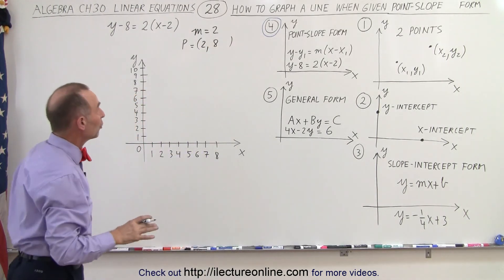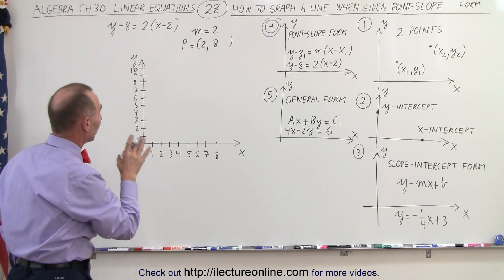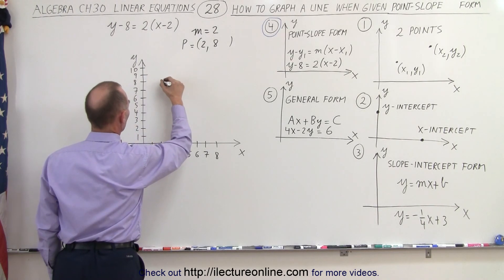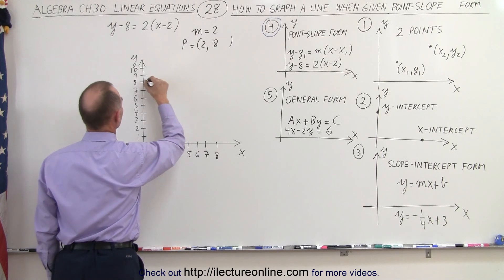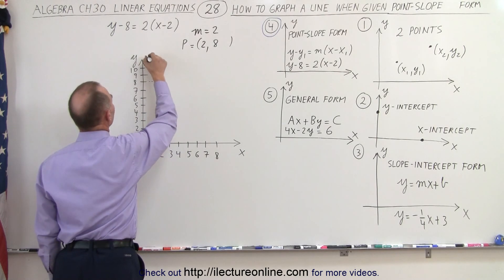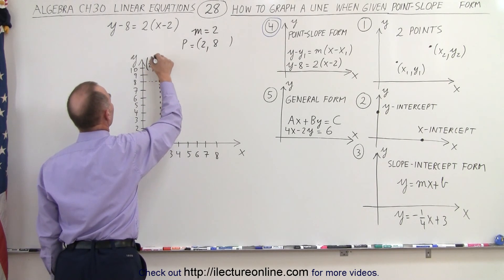So first what we're going to do is find that particular point, because we know that's on the line. So when x equals 2 and y equals 8, which is right here. There we go. So we found the point, and that point is the point 2, 8.